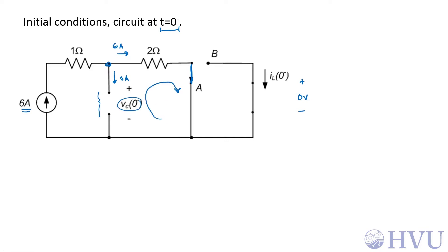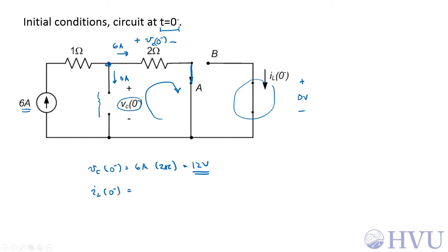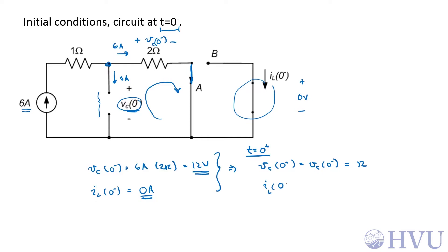KVL tells me this voltage equals the voltage across the 2 ohm resistor. So V sub C at t equals 0 minus is 6 amps times 2 ohms, which is 12 volts. There is no forcing function connected to the inductor, so I sub L at 0 minus is 0 amps — the inductor initially has no energy stored in it. For the initial conditions at t equals 0 plus, invoking the principle that capacitor voltages can't change instantaneously, V sub C at 0 plus equals V sub C at 0 minus, which is 12 volts. Likewise, inductor currents can't change instantaneously, so I sub L at 0 plus equals I sub L at 0 minus, which is 0 amps.